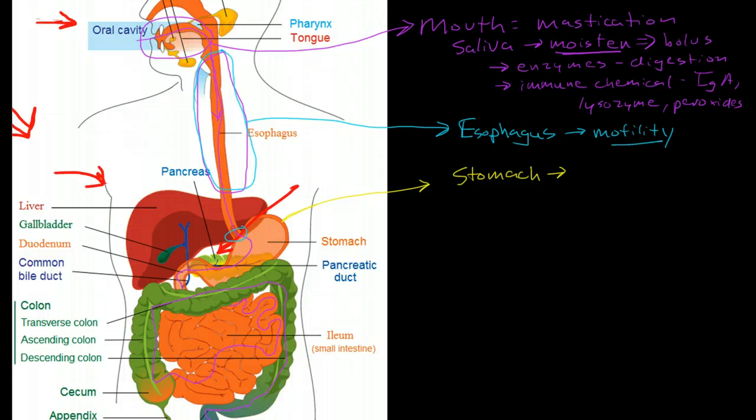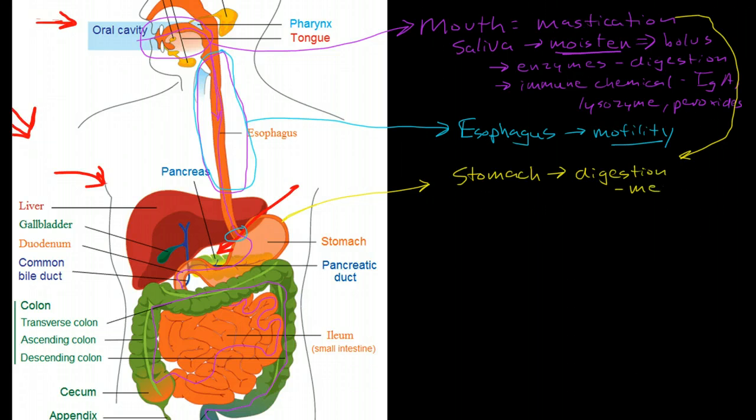Then we have the GE junction here and that moves us into the stomach. The stomach sort of churns to break up chunks more and it does this through mechanical churning.